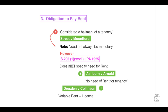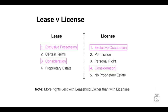Ashburn v Arnold also stipulates there is no need for rent for a tenancy, whereas Dresden v Collinson speaks of a variable rent equating to a license. Section 205 of the Law of Property Act does not specify rent, yet Street v Mountford considers payment of rent a cornerstone of tenancy. All three cases — Street v Mountford, Ashburn v Arnold, and Dresden v Collinson — are available in your case summaries, and I urge you to review them to understand why the dicta in these cases differ.